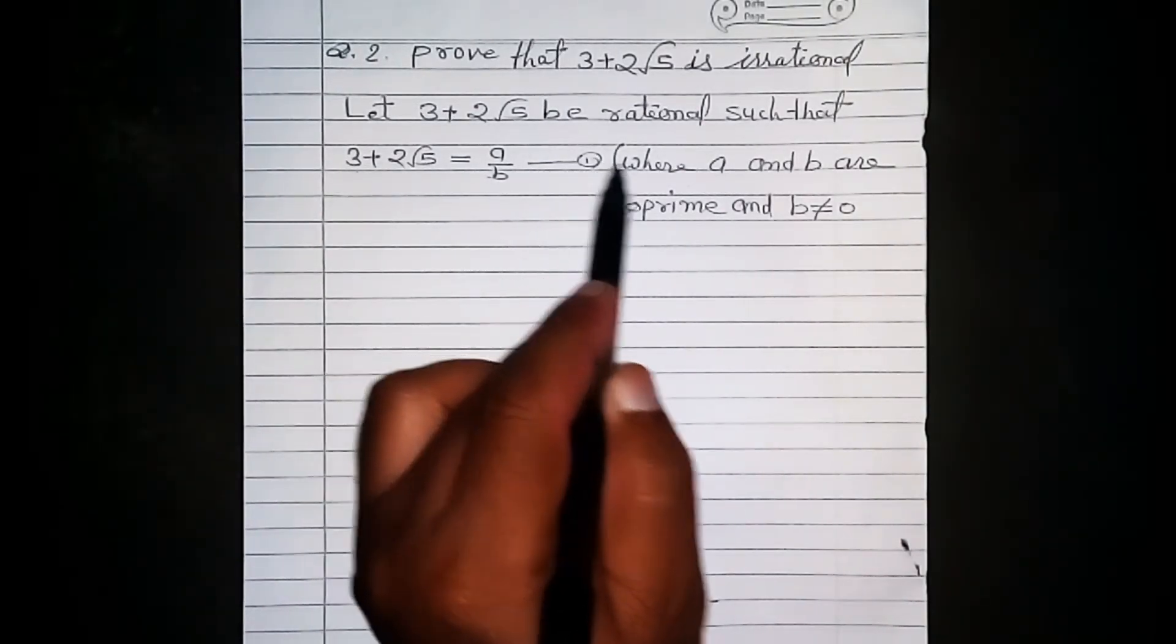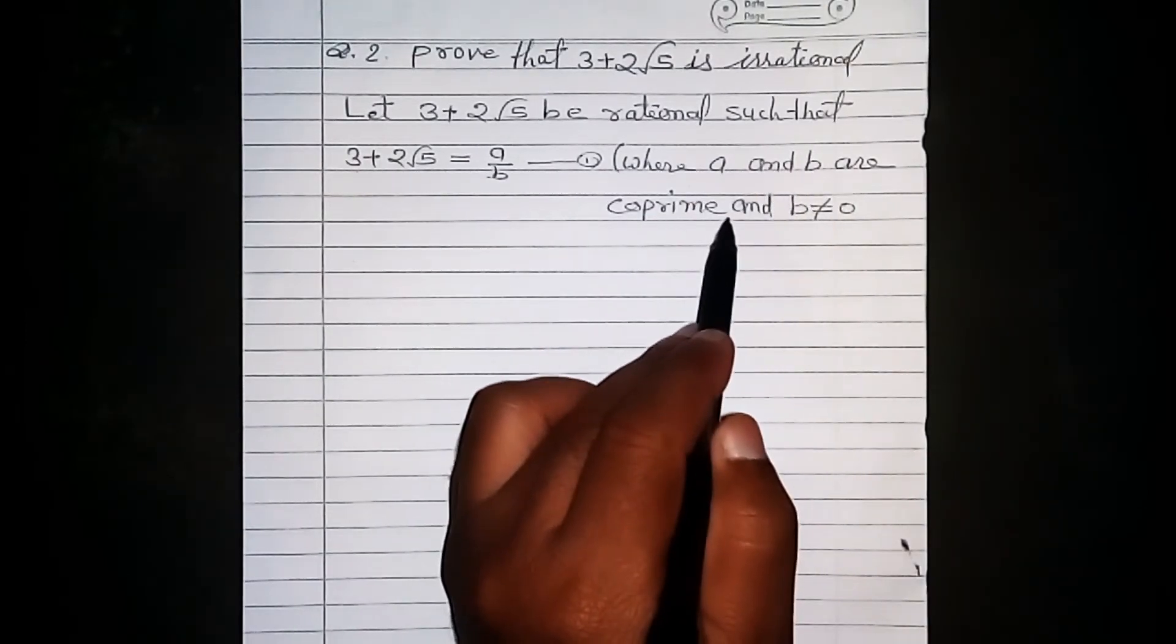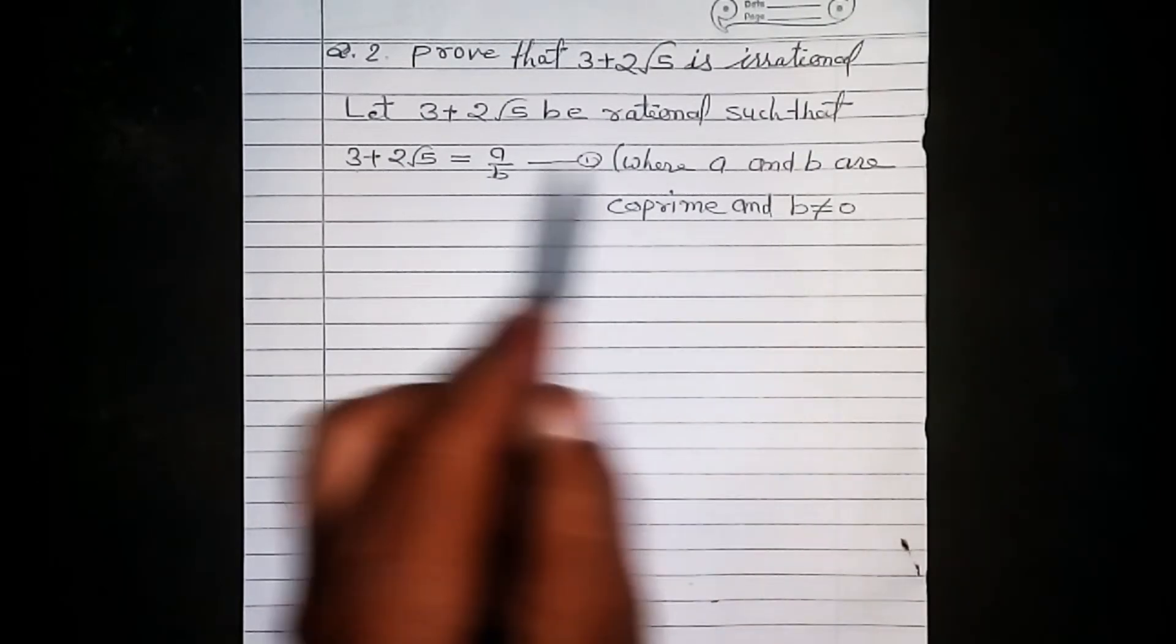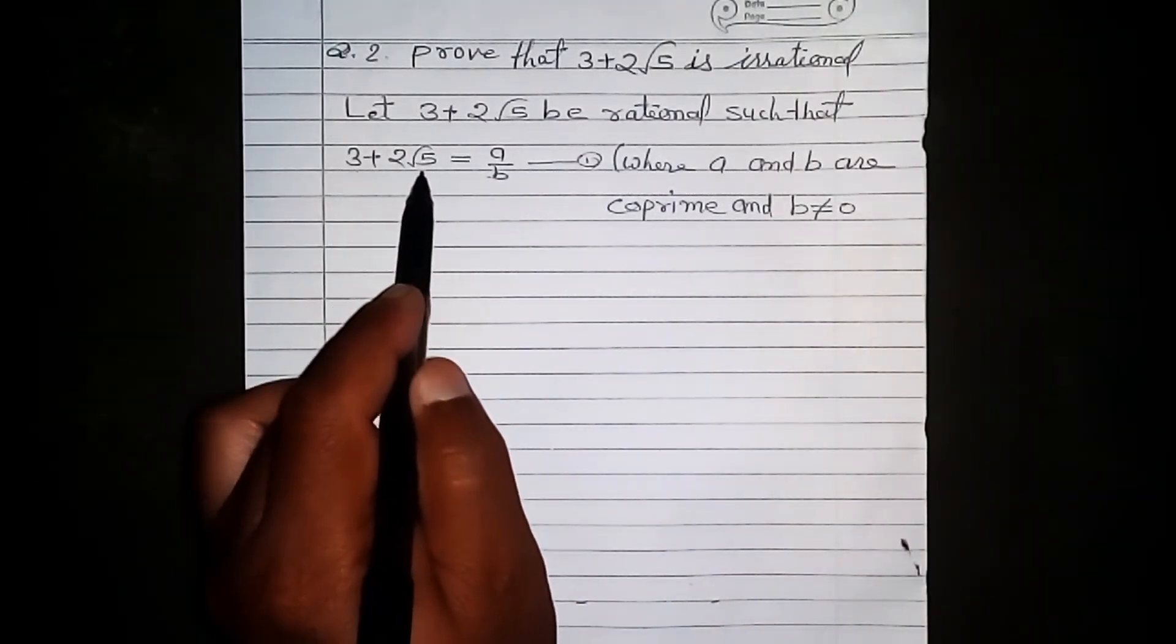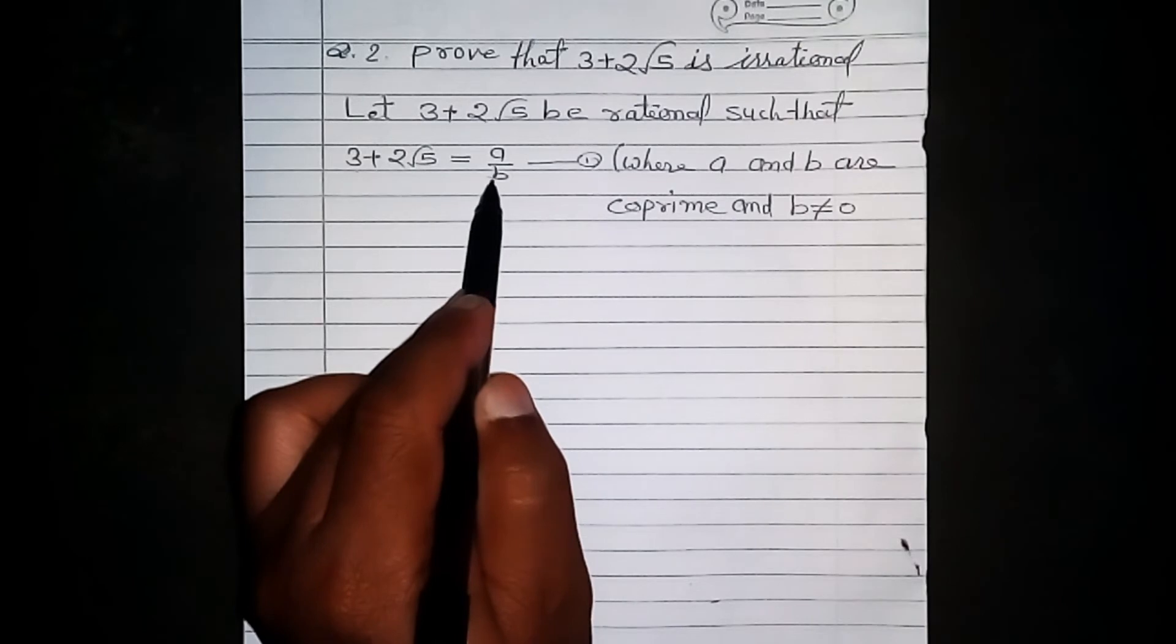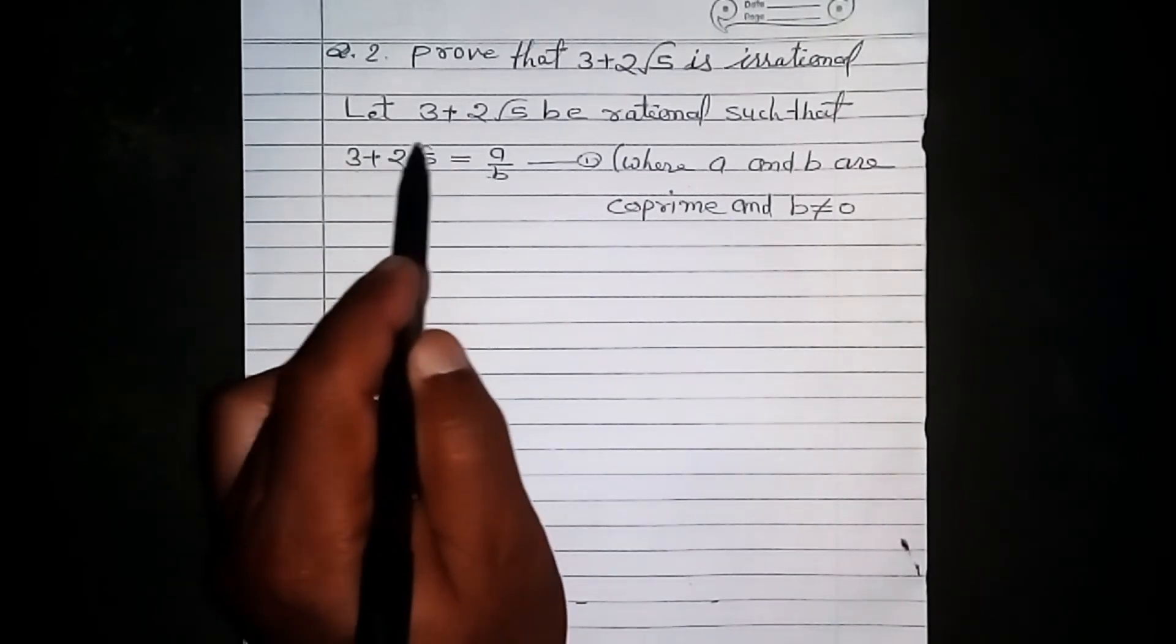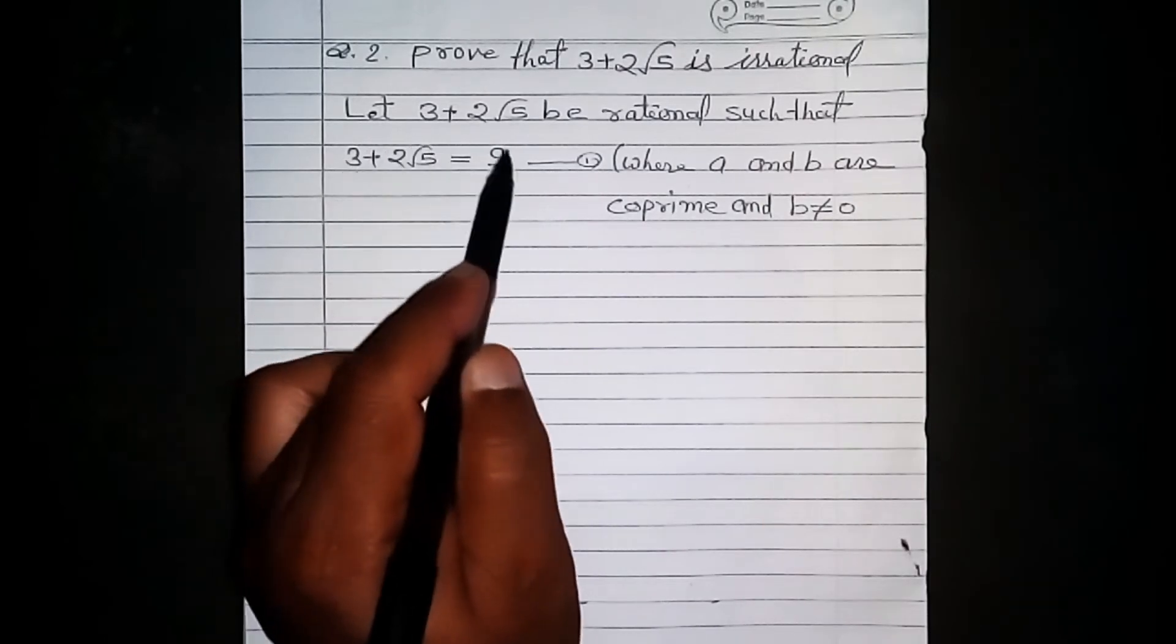Where a and b are co-prime and b is not equal to zero. Here 3 plus 2 root 5 is equal to a by b is an equation, so let us try to simplify it.